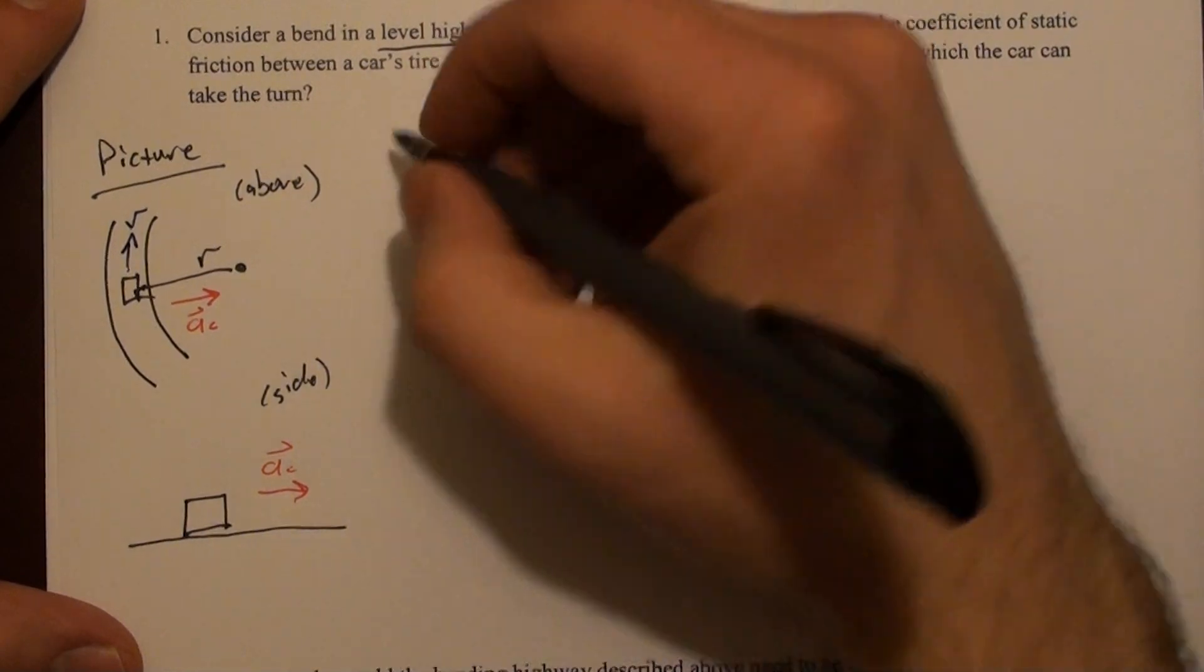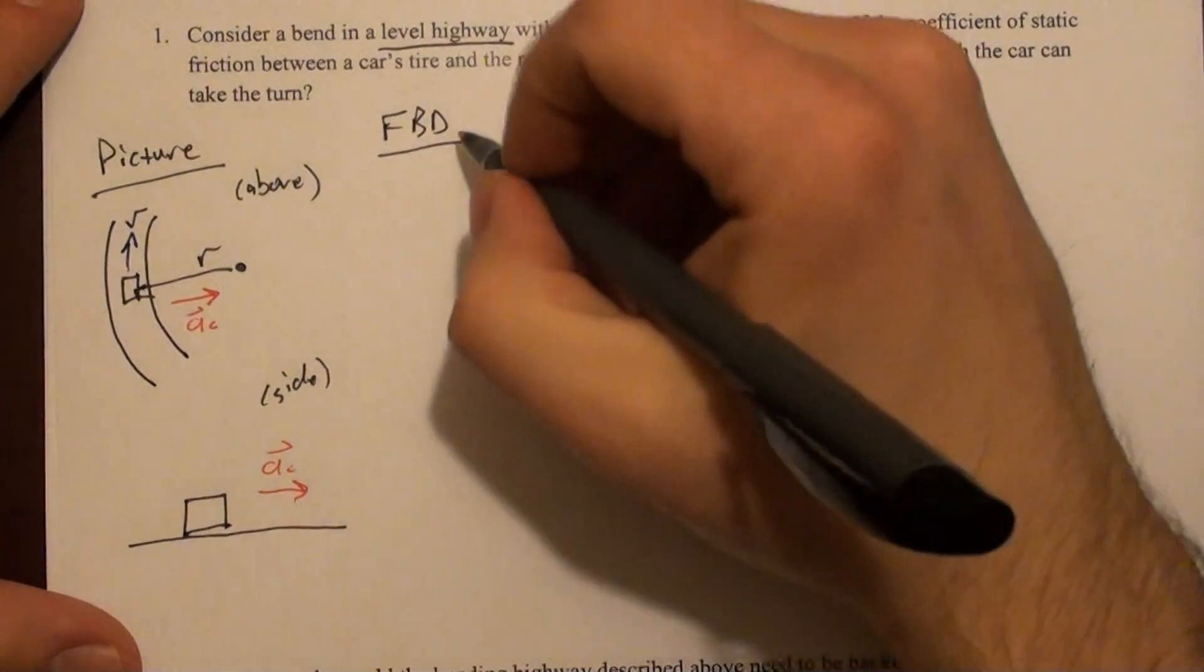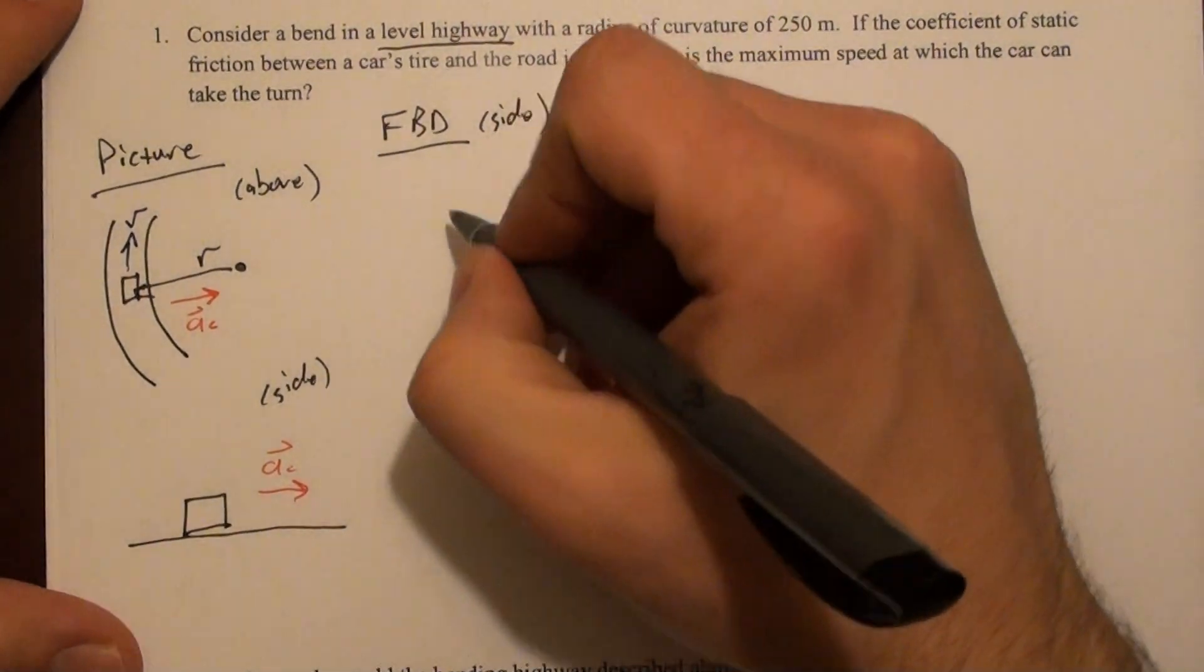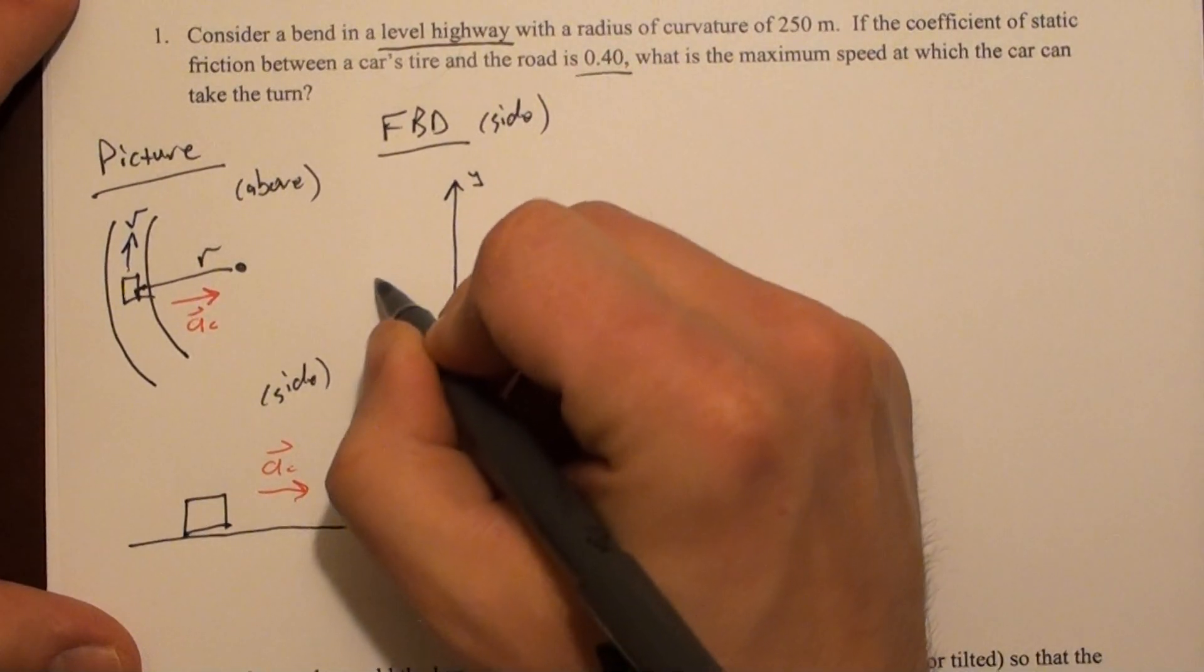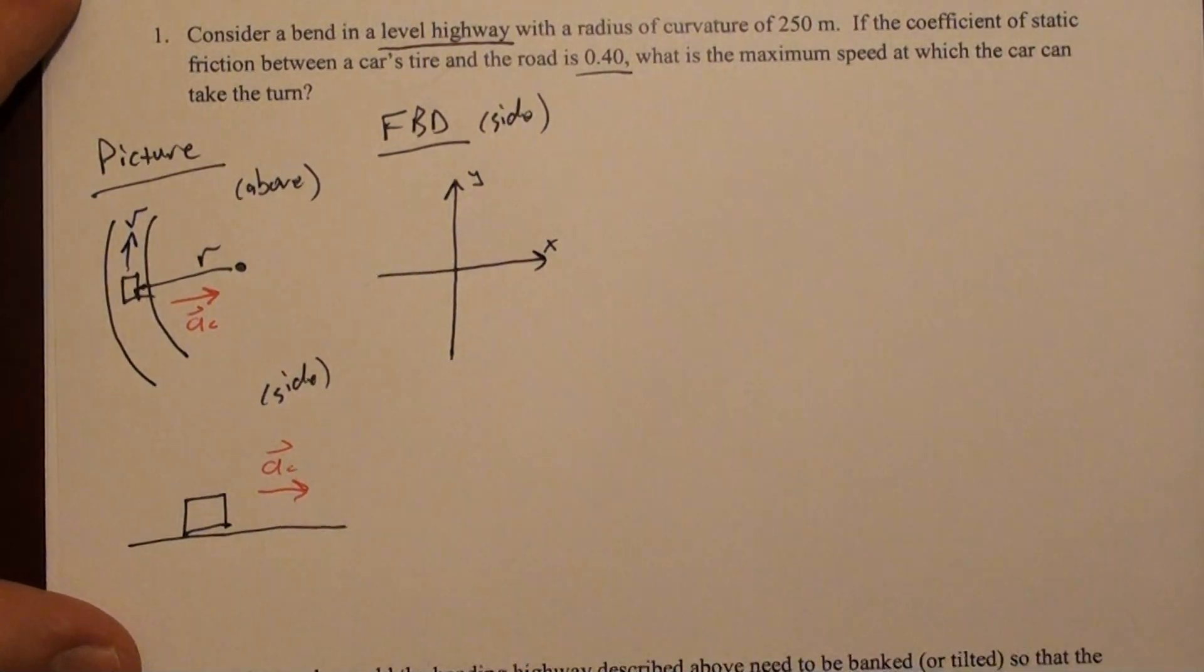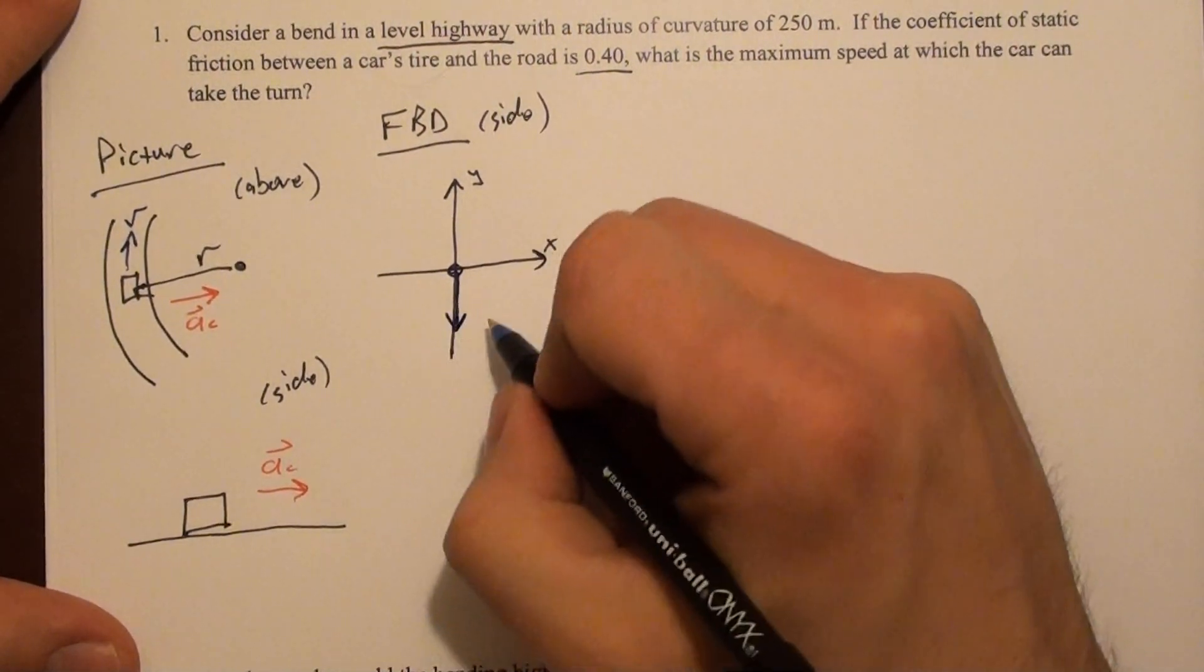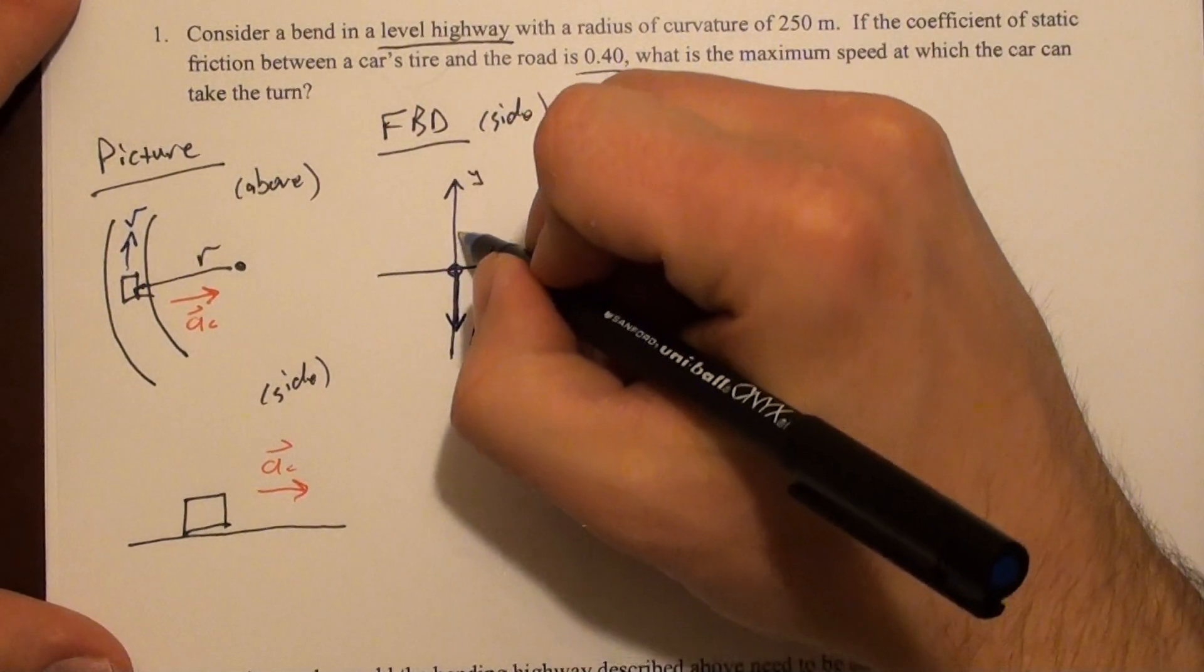Let's draw a free body diagram. The one that's going to be useful is if we draw it as viewed from the side, corresponding to this picture here. Set up some axes like this. There's an x, y. We should consider the forces that are acting. Clearly gravity acts directly downward, and it's sitting on the road, so there's also a normal force.